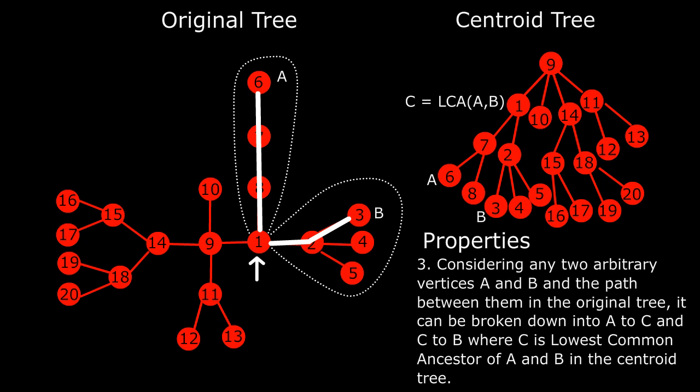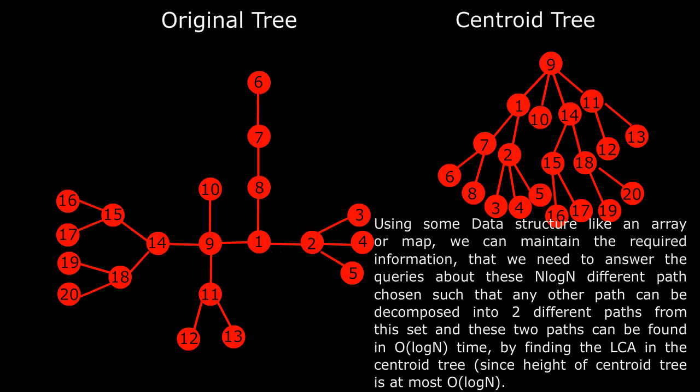So, we decompose the given tree into n log n different paths from each centroid to all the vertices in the corresponding subtree such that any path is a concatenation of two different paths from this set. Using some data structure like an array or map, we can maintain the required information that we need to answer the queries about these n log n different paths chosen so that any other path can be decomposed into two different paths from this set and these two paths can be found in O(log n) time by finding the lowest common ancestor of the centroid tree since the height of the centroid tree is at most log n.